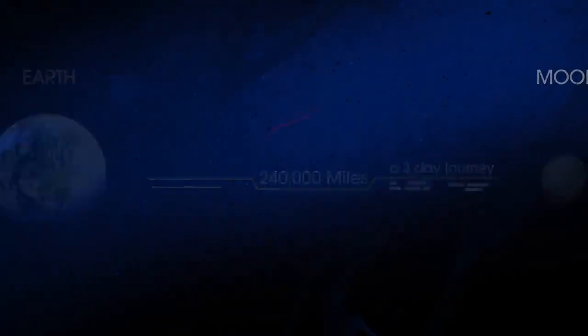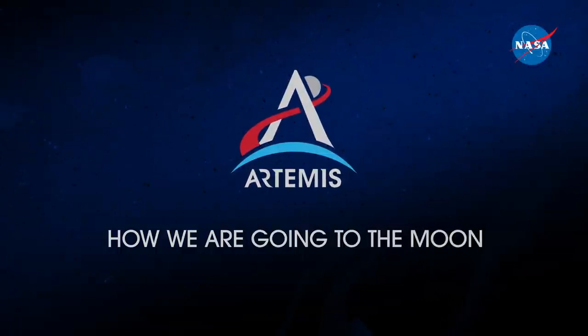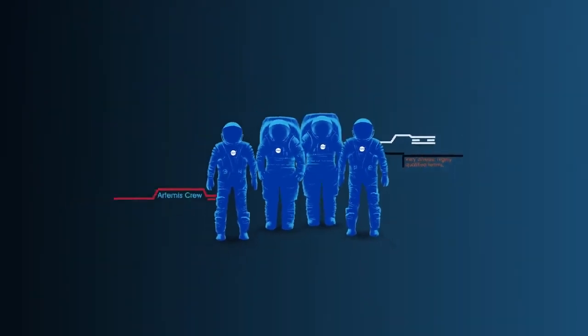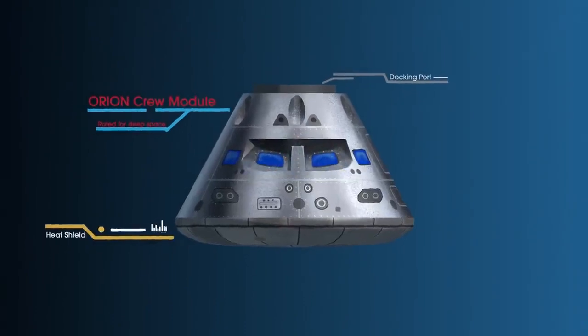So, what will an Artemis mission look like? Everything is designed and tested with our most important element in mind, the astronauts. This is their deep-space, human-rated spacecraft called Orion, built in three parts.